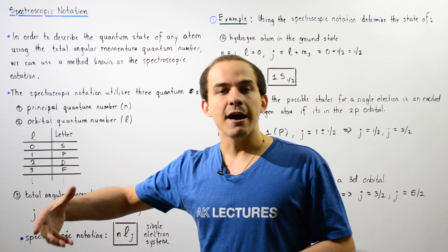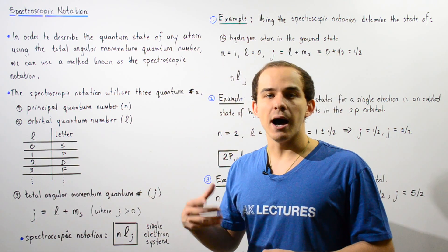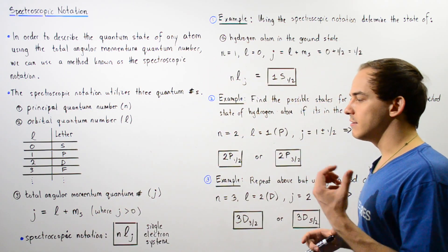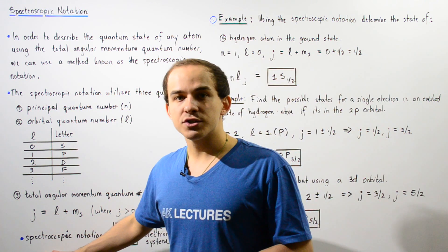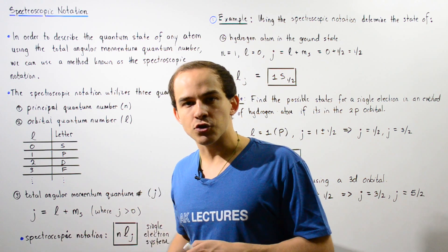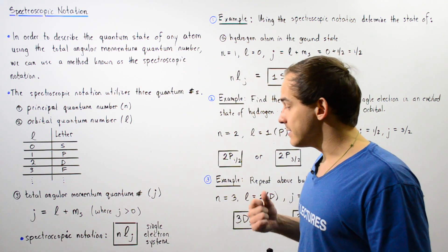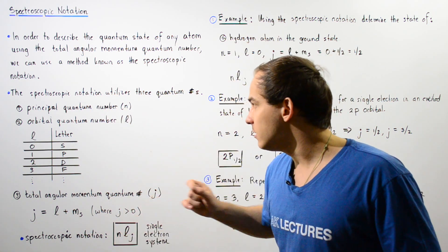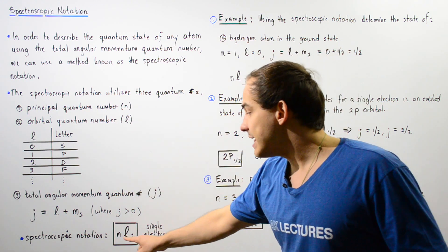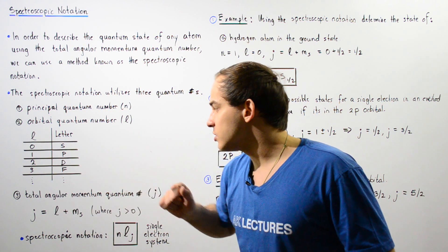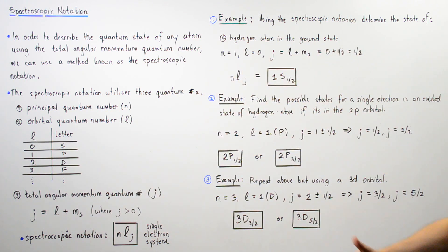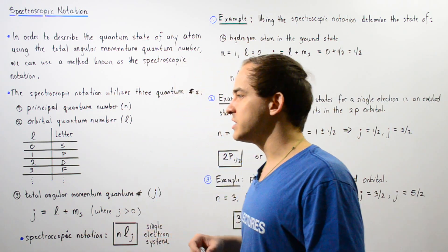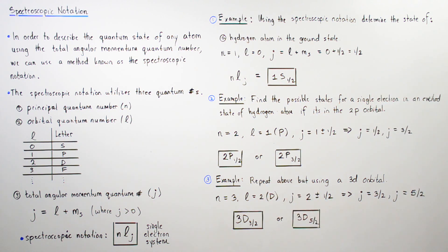Notice that j can never be a negative value — j is always a positive value, where ms is either negative one-half or positive one-half. The spectroscopic notation for a single electron system, for an atom that contains a single electron, is given by this notation: n followed by the letter for l, with j as the subscript, where n is the principal quantum number, l is the orbital quantum number, and j is the total angular momentum quantum number.